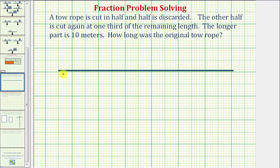So using this segment as the tow rope, let's go through the problem again. A tow rope is cut in half and half is discarded. So let's go ahead and cut this in half, let's say here. Let's discard this half here.